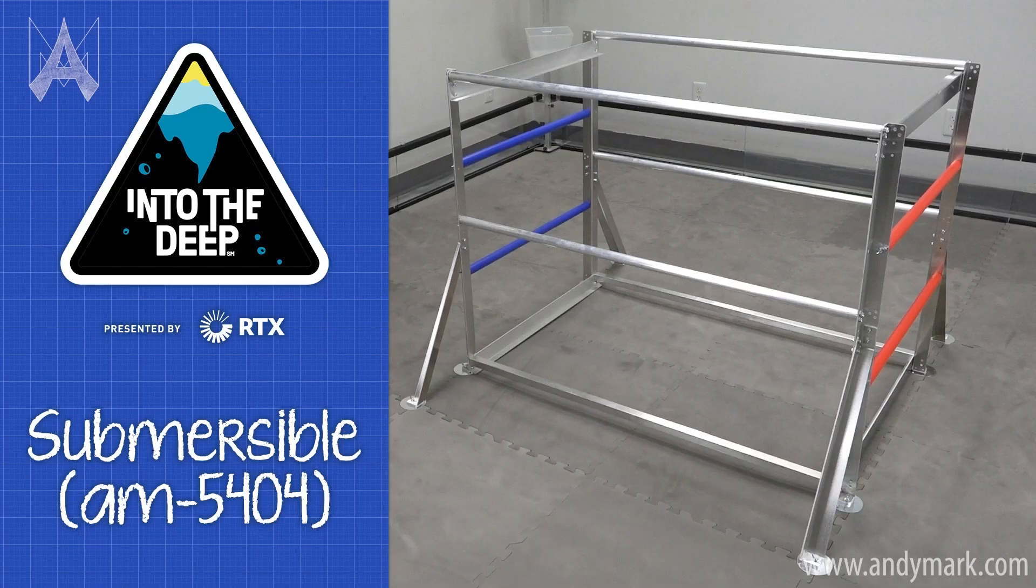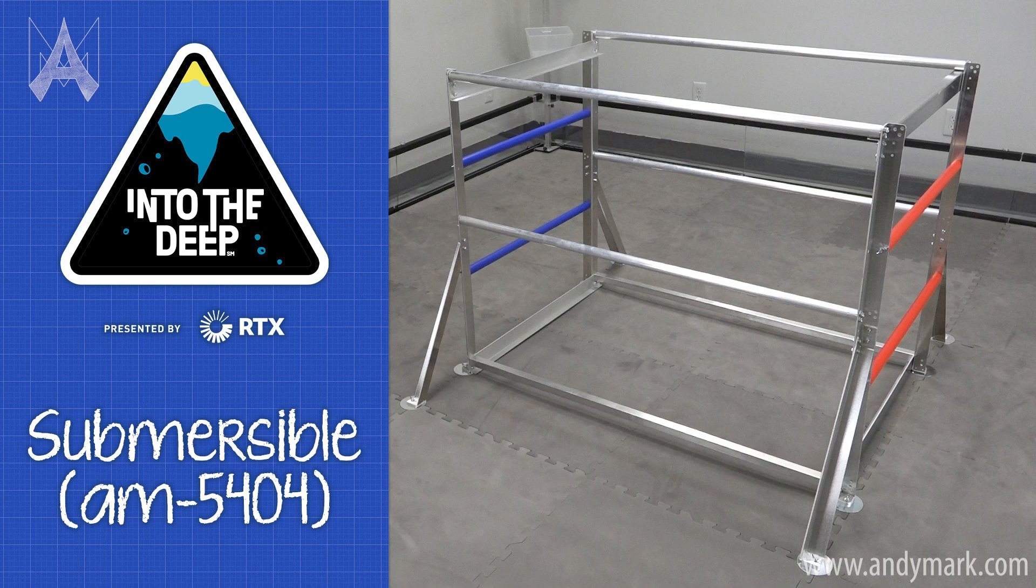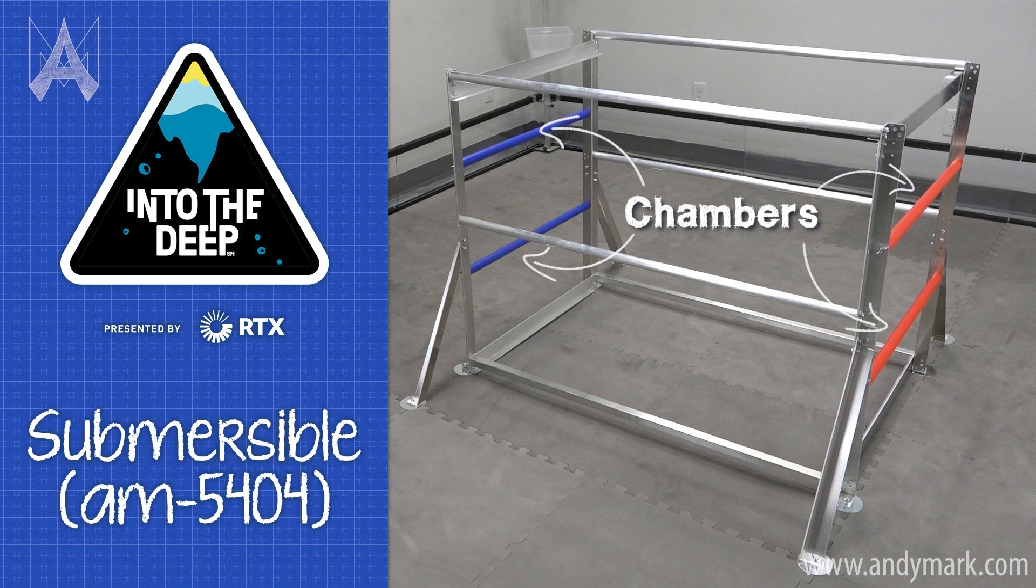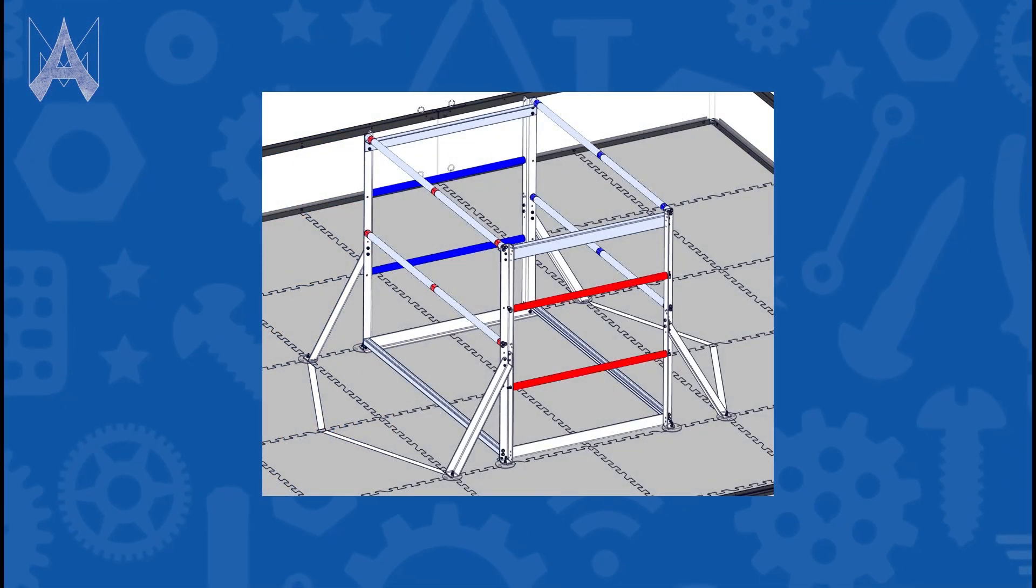The submersible is a large structure in the center of the field, taking up about four tiles worth of space. On the submersible are four chambers, two for each alliance, and four climbing rungs, two for each alliance. The chambers are colored red and blue for your alliance color. The rungs have red and blue tape on them to define who is climbing on which side of the submersible.